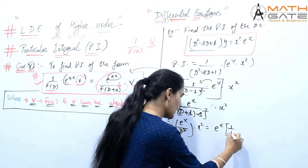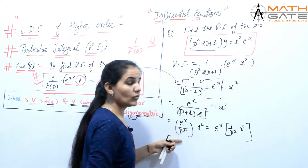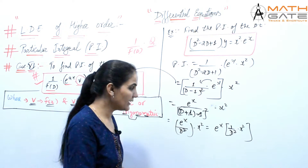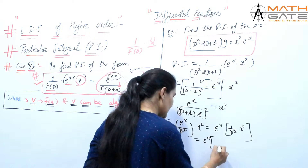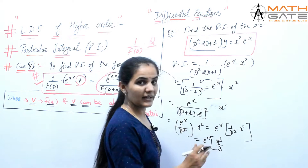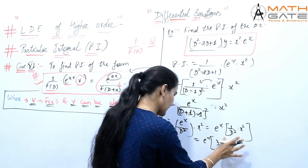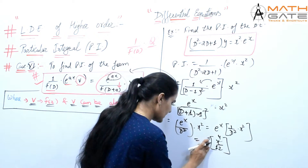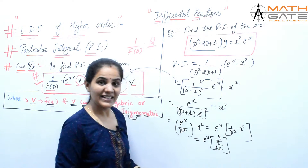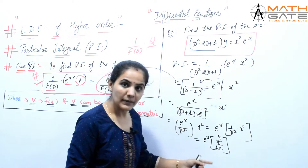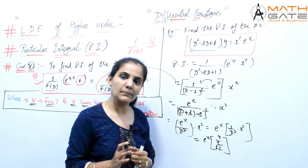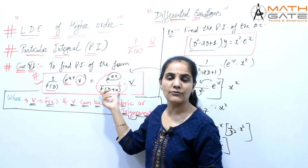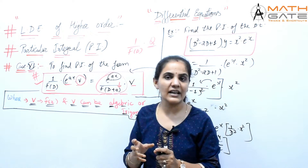So this becomes e^x times 1 by D² applied to x². Now 1 by D² applied to x² means integrating x² two times. So this gives e^x times x³/3, and integrating again gives x⁴/12. Therefore the particular integral is e^x into x⁴/12. So there will be two functions applied at a time — one e^x by F(D+A) and then V applied after.